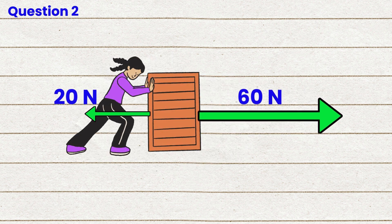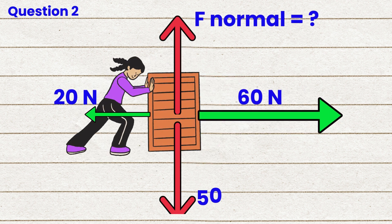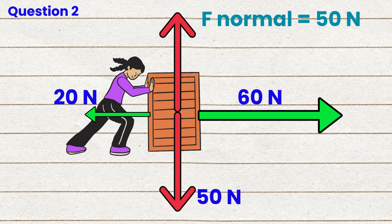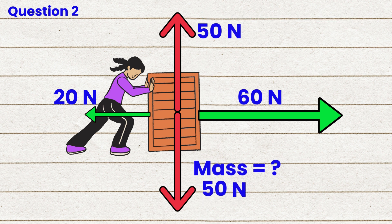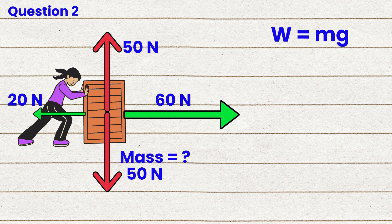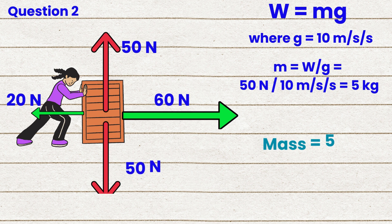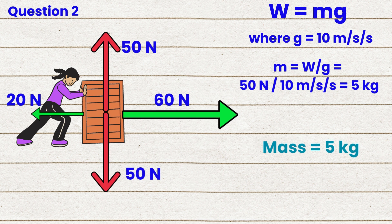Question 2. Ion pushes a box with a 60 newton force. The friction force acting against the box is 20 newtons. First, find the normal force of the box if its weight is 50 newtons. The normal force equals the weight of the box, so F normal equals 50 newtons. Now let's find the mass of the box. The weight is 50 newtons. Weight equals mass times acceleration due to gravity, which is 10 meters per second per second. So mass equals weight divided by acceleration due to gravity, which equals 50 newtons divided by 10 meters per second per second, and that equals 5 kilograms.